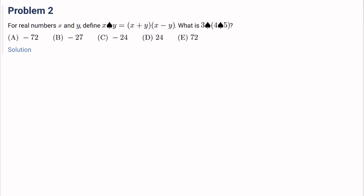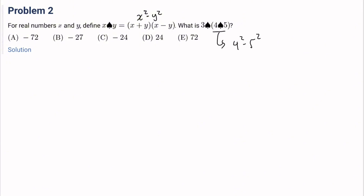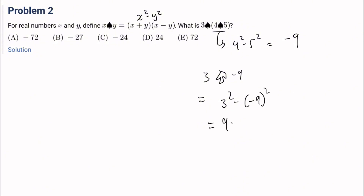Number 2: for real numbers x and y, define x spade y equals x minus y times x plus y. What is 3 spade (4 spade 5)? We know this is x squared minus y squared. So 4 spade 5 is 16 minus 25, which is negative 9. Then 3 spade negative 9 is 9 minus 81, which is negative 72. The answer is A.